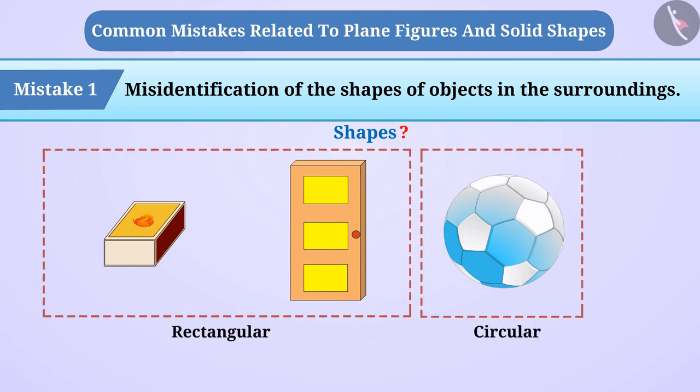This is because in their childhood, while identifying shapes, it was said that the matchbox and door is rectangular and the ball is circular.